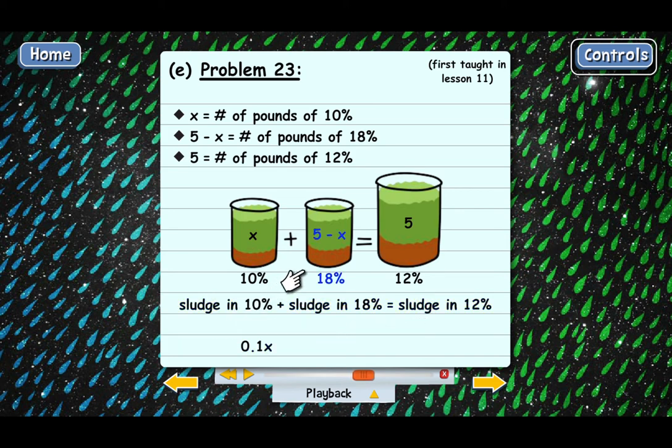Now we write an expression for this one. It's going to be 18% of however much is in the whole thing, because 18% of this is sludge. And so we take 0.18 times the quantity 5 minus X. That's the number of pounds in the whole thing. And so taking 18% of that is going to give us the amount of sludge in that one. And then finally, we calculate the amount of sludge in this one. There are 5 pounds in the whole thing. 12% of it is sludge. And so we want 0.12 times 5. That's our equation.